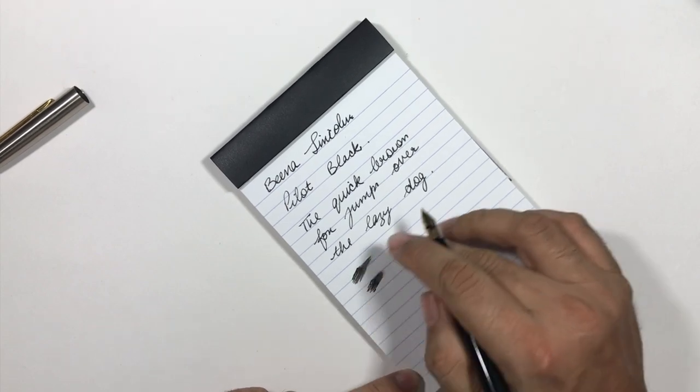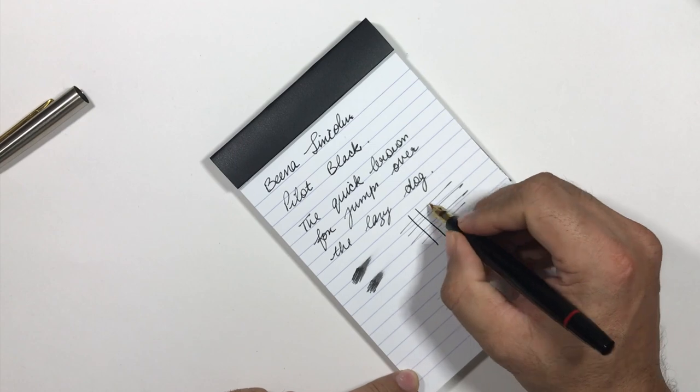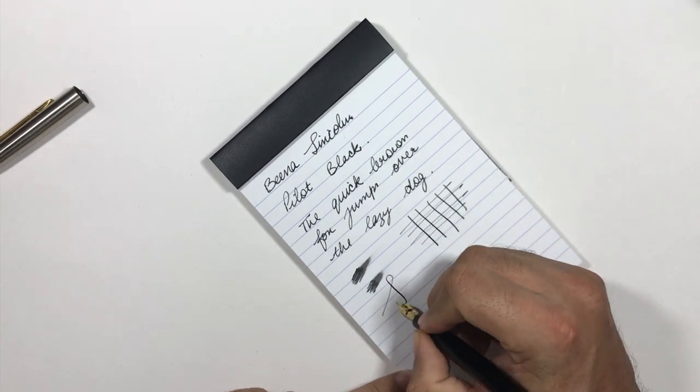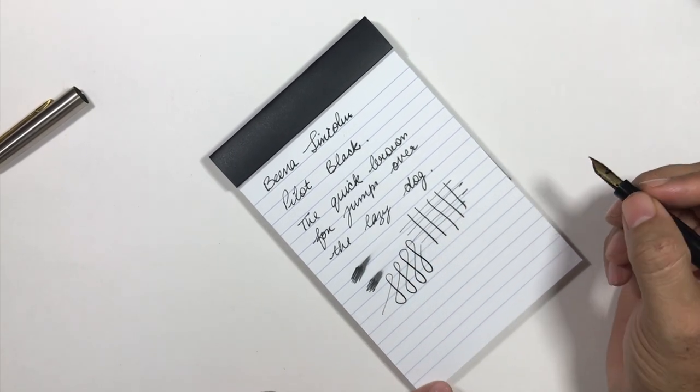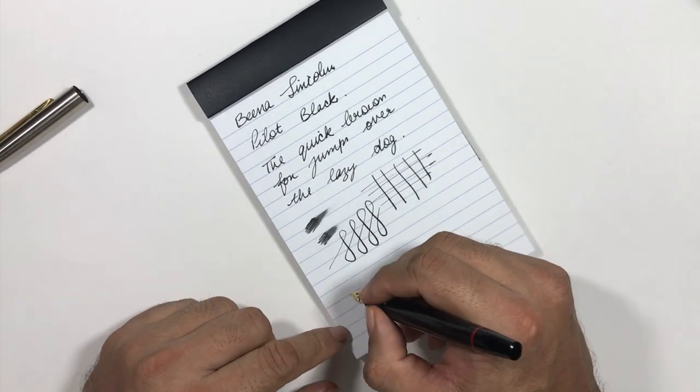You can see it's quite wet. It's a medium nib and you can have some line variation here.